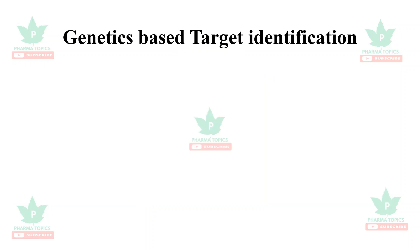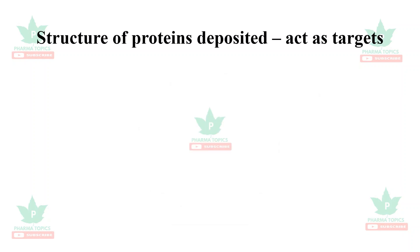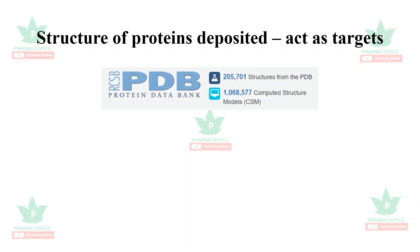Genetics-based target identification has three approaches: the positional cloning approach, the candidate gene approach, and the target class gene approach. The structures of proteins are deposited as targets in various databases.